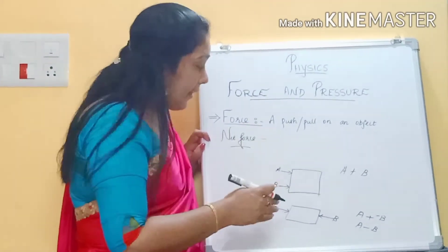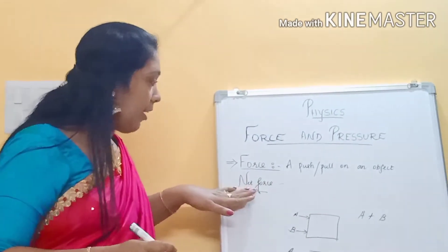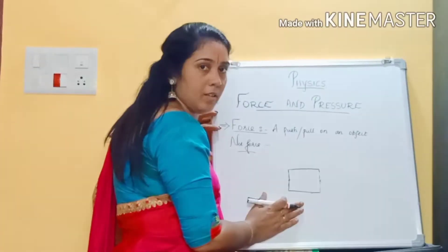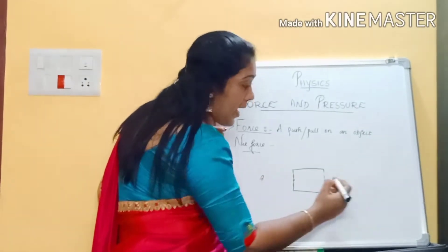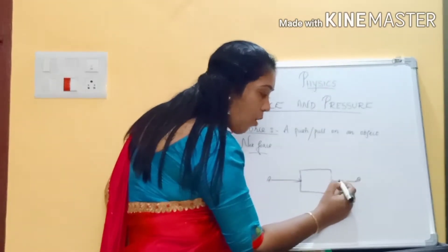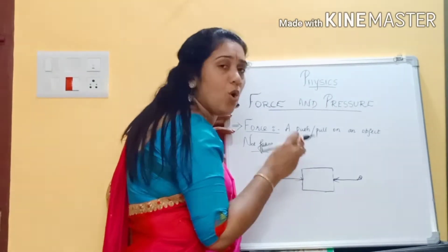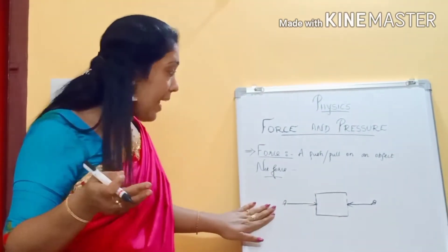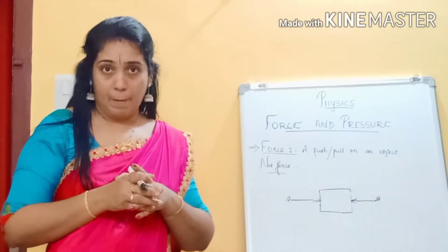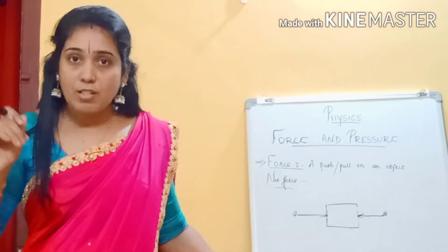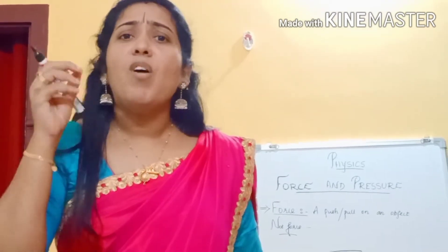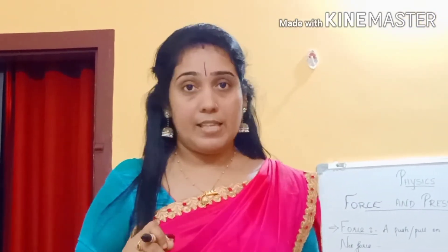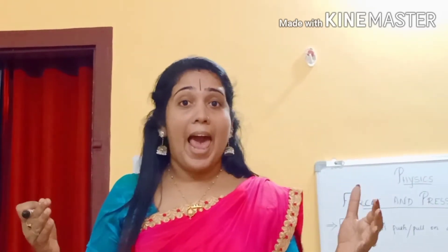Again, I am placing an object and asking A and B to give a force in opposite directions. But here there is no change in position — the box is stationary, at rest. Why? Because A and B are giving the same amount of force. In this case we say it is a balanced force. If the two forces acting from opposite directions are equal in magnitude, it is a balanced force.